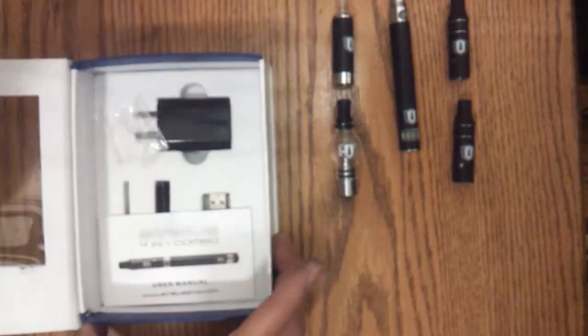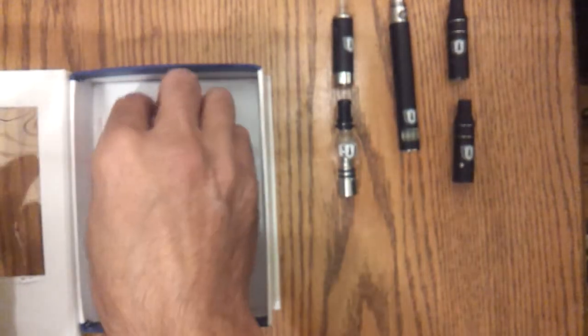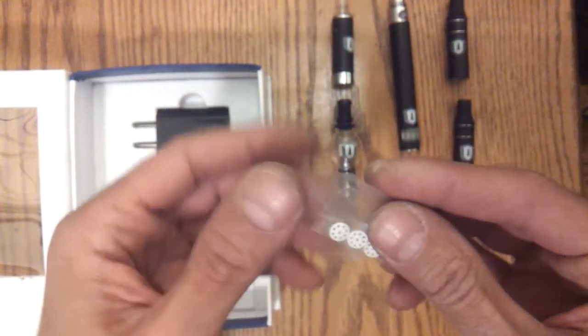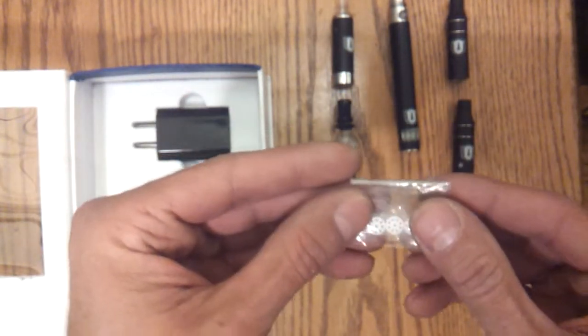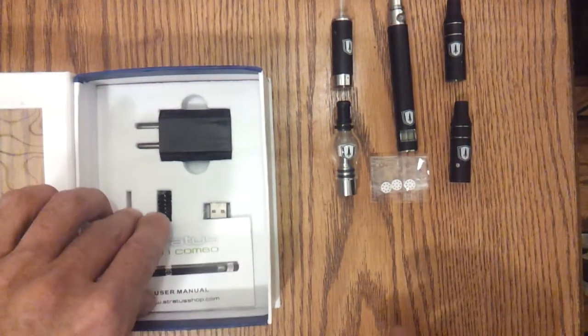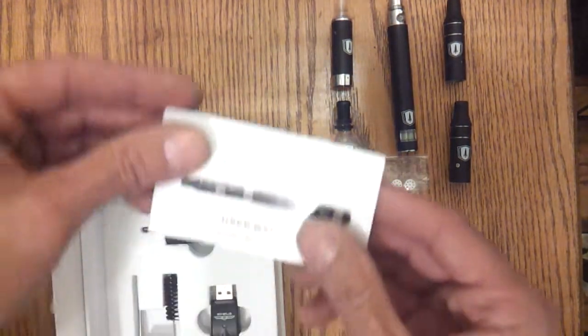Underneath the second layer, they give you three ceramic screens to put on the coil to help prevent combusting. It's similar to an Atmos-Raw, which we know can combust, and this should help. We'll find out.